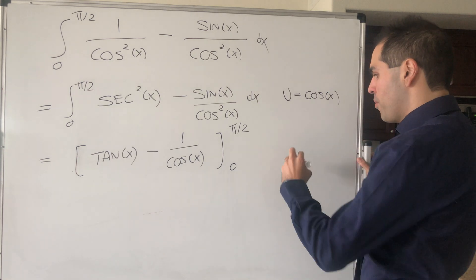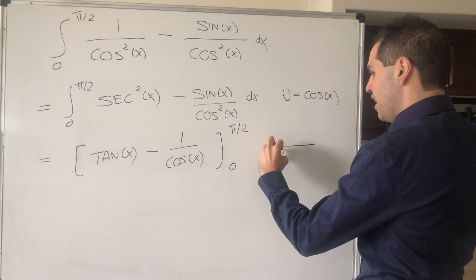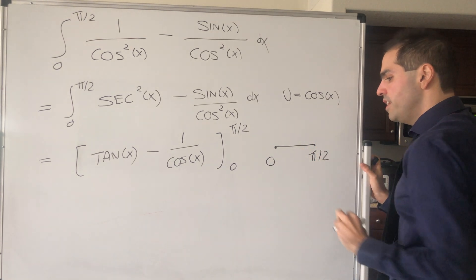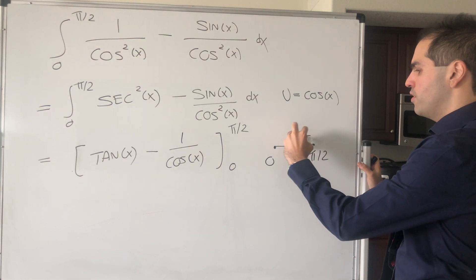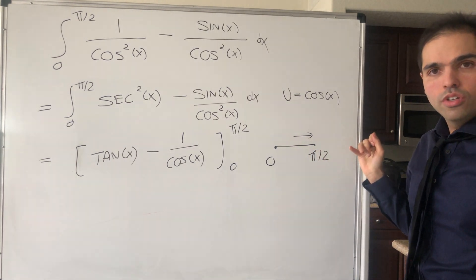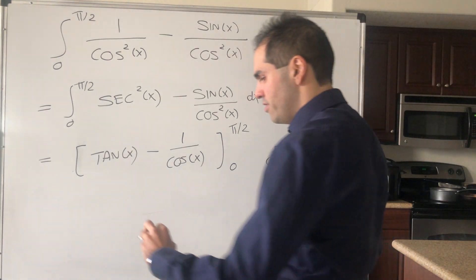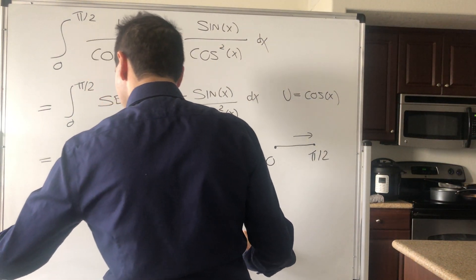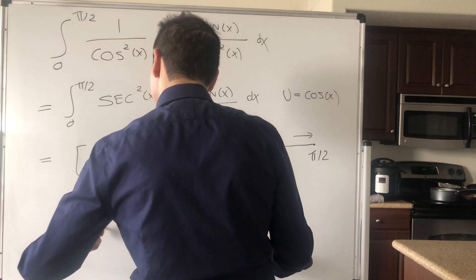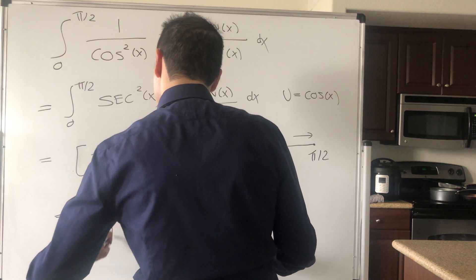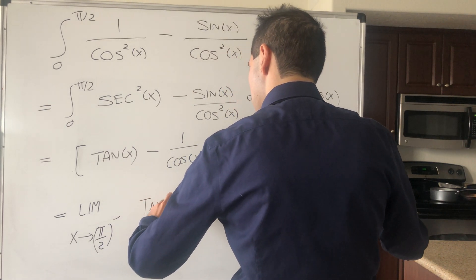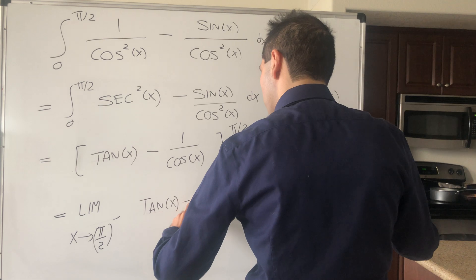So it turns out it's not an improper integral, but more of an improper antiderivative. And so, because we're dealing with the interval from 0 to pi over 2, what we have to do, we have to take the limit of pi over 2 to the left. So, in other words, what does this become? This is the limit as x goes to pi over 2 minus of tangent of x minus 1 over cosine of x.